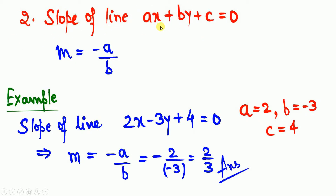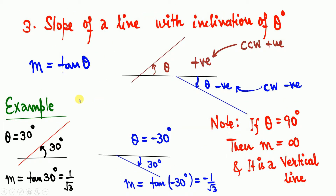Suppose you are asked to find the slope of a line for the equation ax + by + c = 0, which represents a straight line. The slope is simply m = -a/b. For example, find the slope of the line 2x - 3y + 4 = 0. Comparing with the standard equation, a = 2, b = -3, c = 4. So slope m = -2 / (-3) = 2/3.